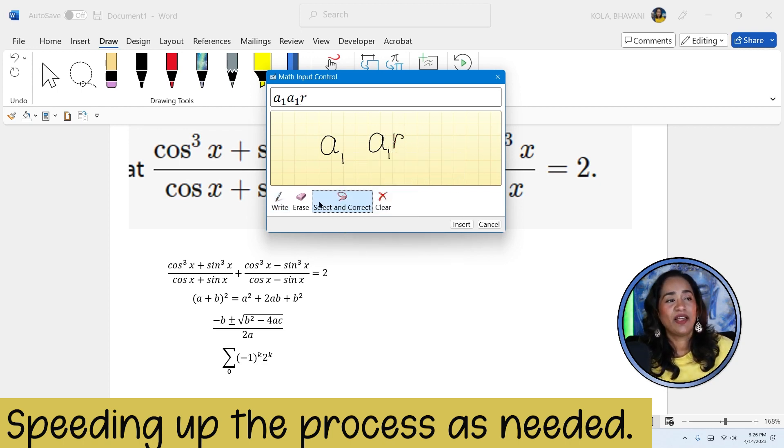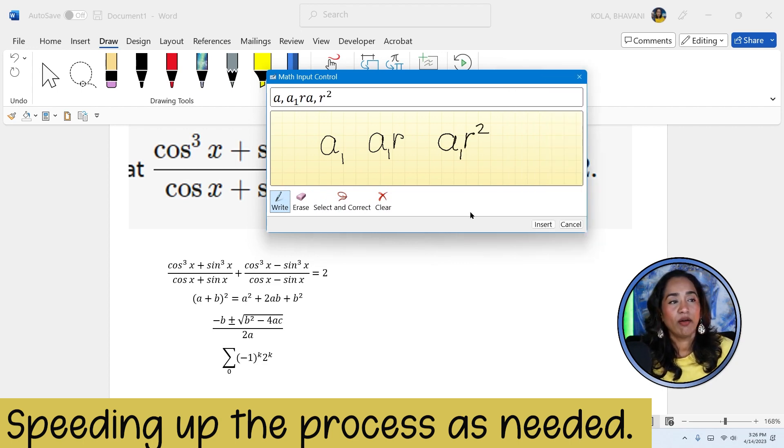And it's going to ask me, is that a p? No, that's a r. And it automatically changes it for me. A one r square. And again, I'm going to go ahead and select this part here. And that's a one. So there you go, a one. So it's very simple for you to go ahead and type in all these equations.